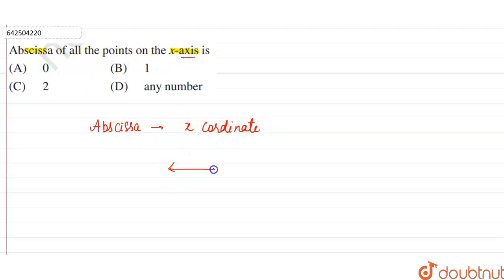So in the Cartesian plane, this is the x-axis, this is the x-dash axis, this is the origin, this is y, and this is the y-dash axis. If you observe, abscissa means the negative values and the positive values on the x-axis.